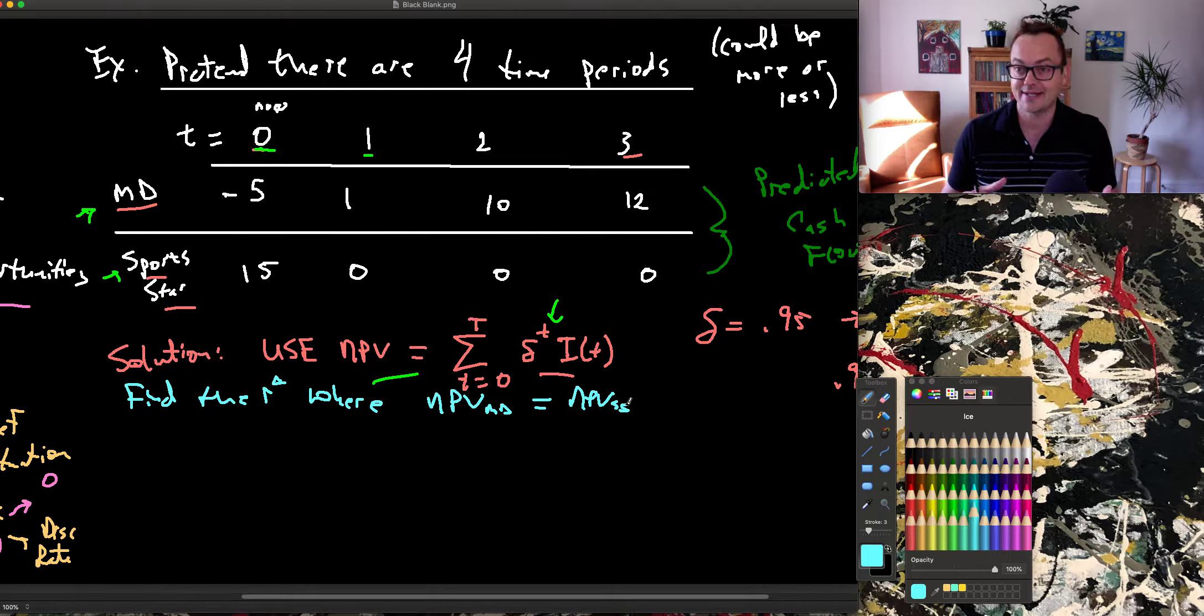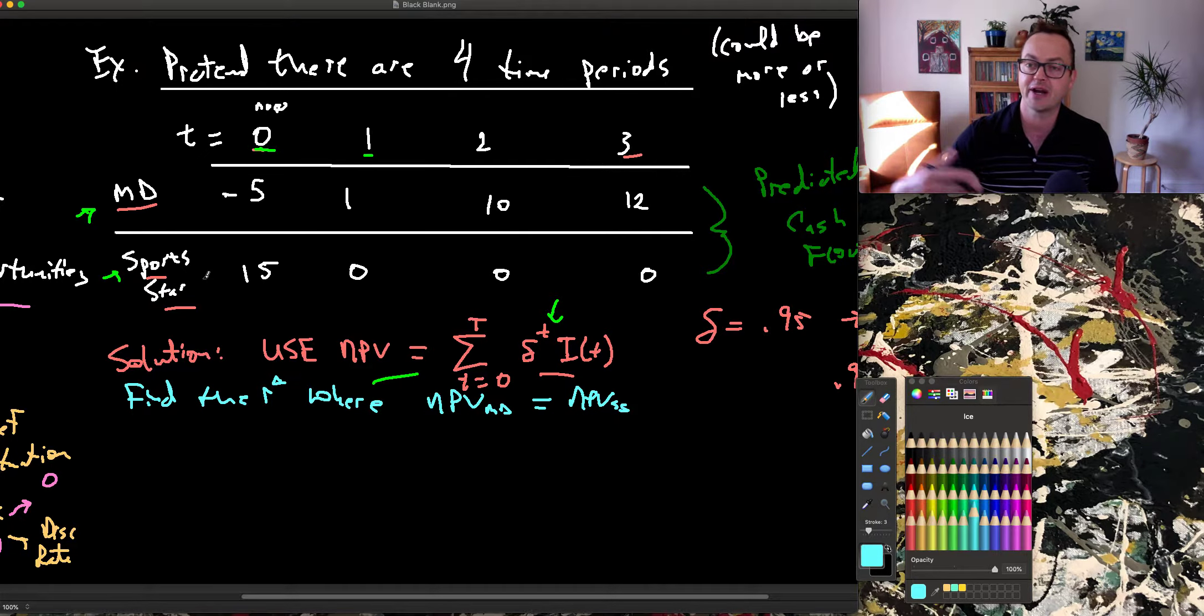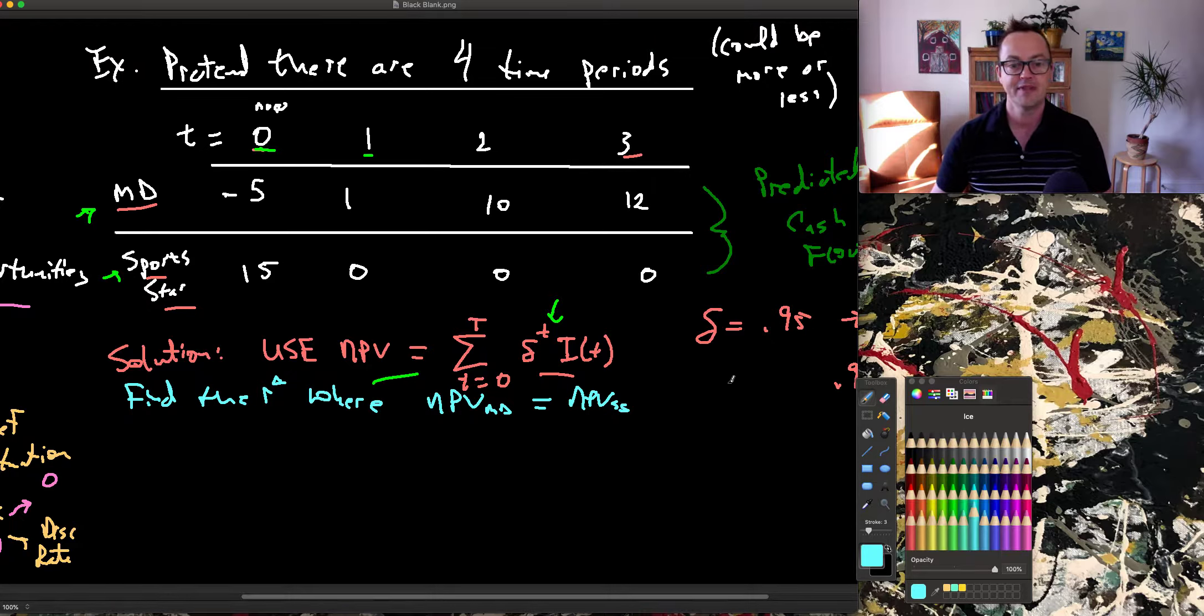So at low rates, basically, I'm more willing to wait for future incomes. At high rates, I'm going to take this immediate income. What's a rate where I'm not willing to wait? Then I'll become a sports star. This is called the internal rate of return.